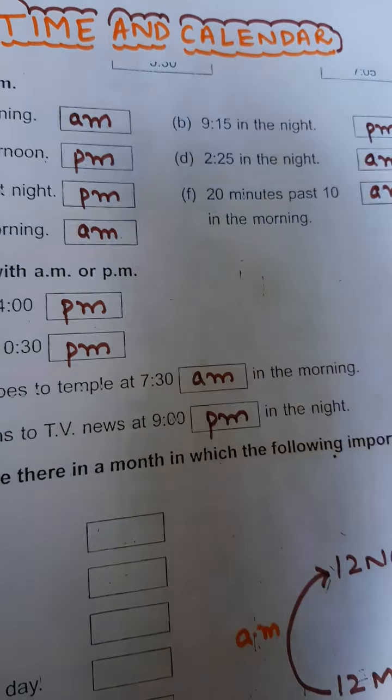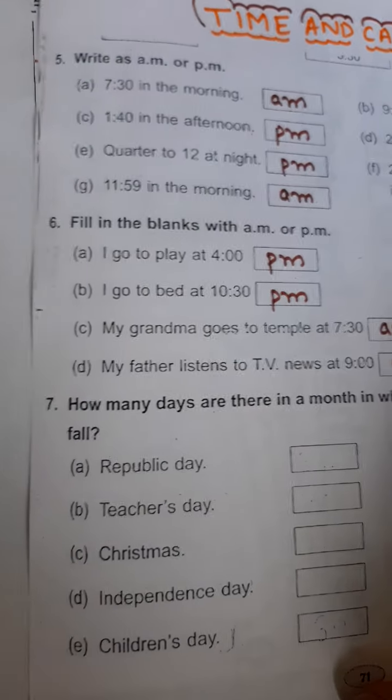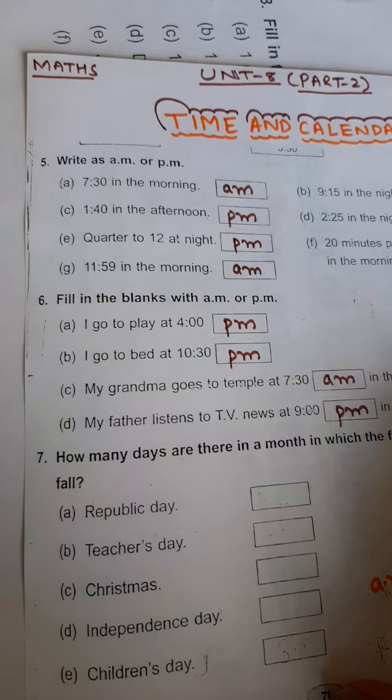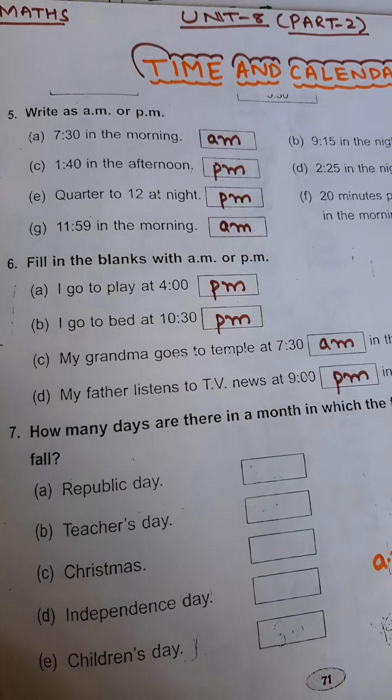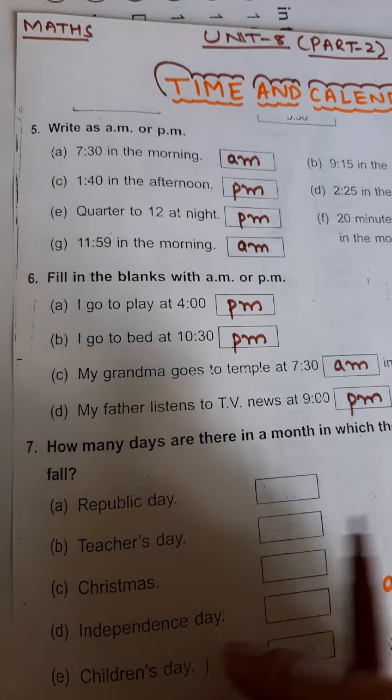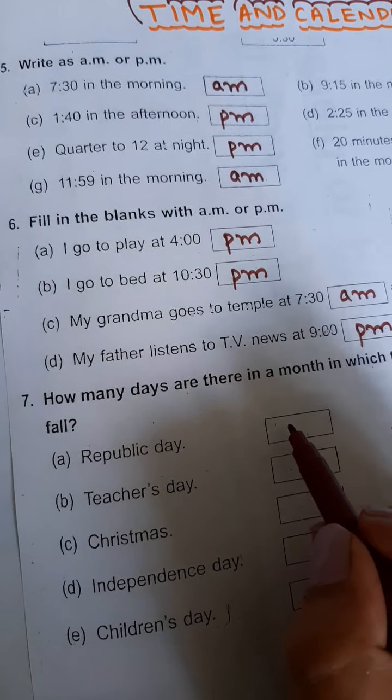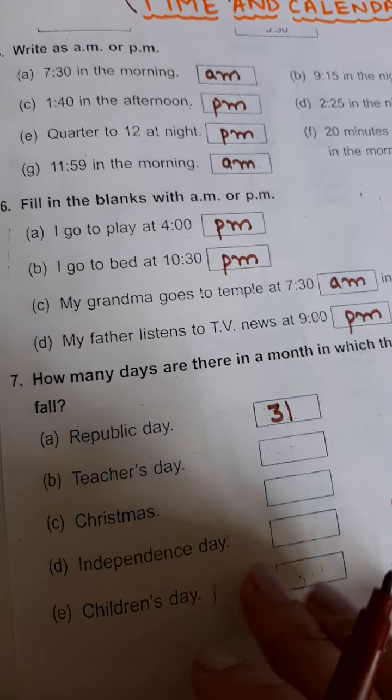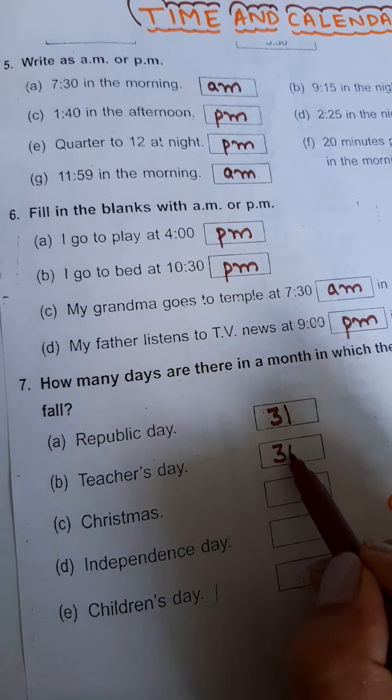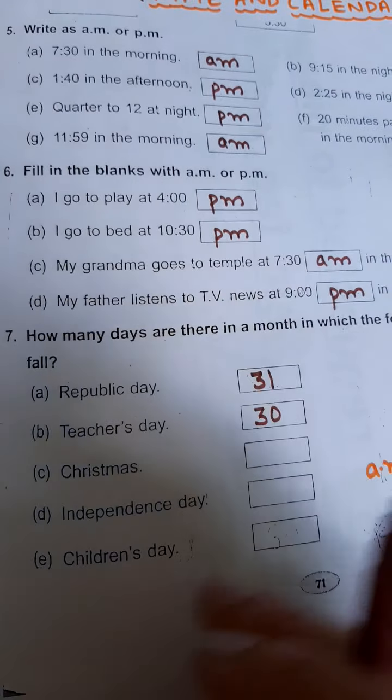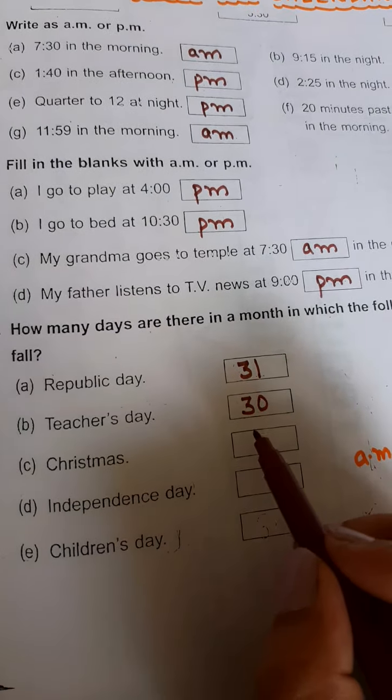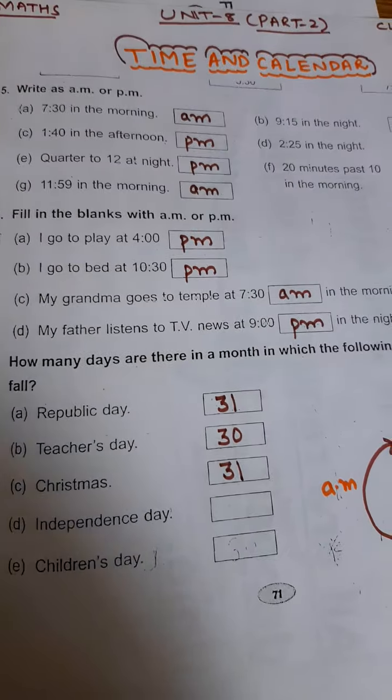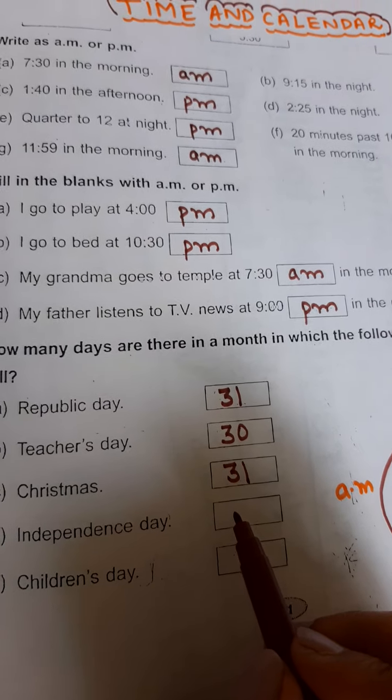Coming on to question number 7: how many days are there in a month in which the following important days fall? Republic Day comes on 26th January, so January has 31 days. Teacher's Day comes on 5th September, and September has 30 days, so write 30 here. Christmas comes on 25th December, and December has 31 days, so write 31 here.